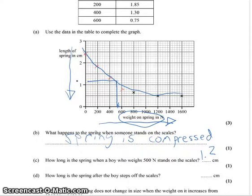Part D. How long is the spring after the boy steps off the scale? Well, when he steps off the scale, there's going to be zero Newtons on it. So we just move up from zero until we get to the length, which is the original starting length of 2.4 centimeters.